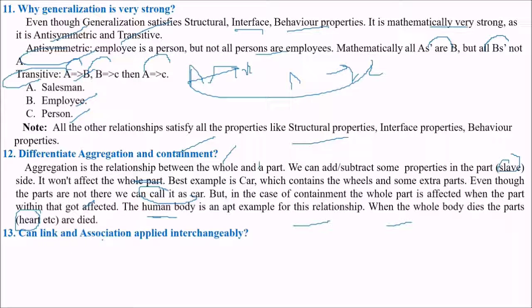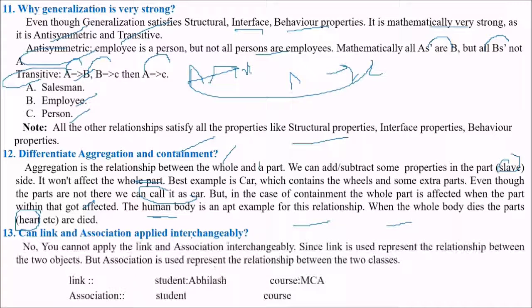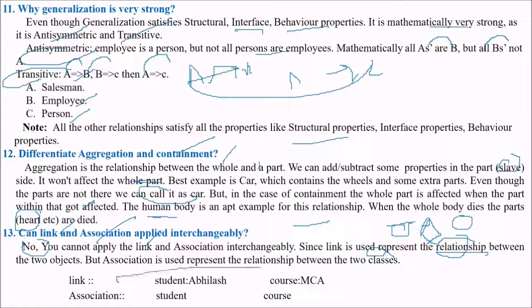Next is can link and association apply interchangeably? No. Link and association cannot be applied interchangeably since link is used to represent the relationship between two objects and association is relationship between two classes.